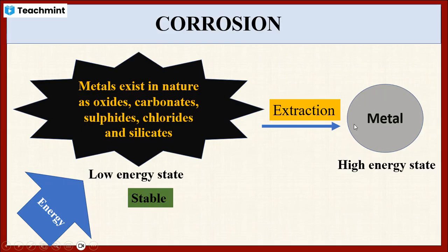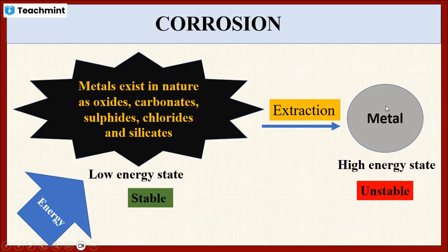Therefore, these extracted metals are unstable compared to these metallic compounds. So, because of this instability, metals are always trying to come back to their stable state, that is compound form. Hence, these metals start to decay. This process is actually known as corrosion.